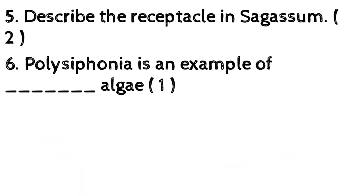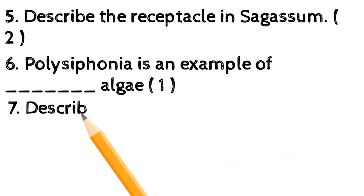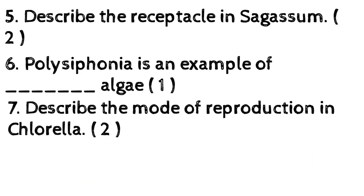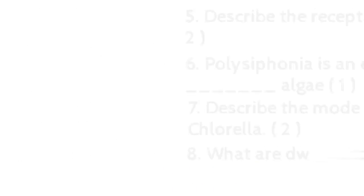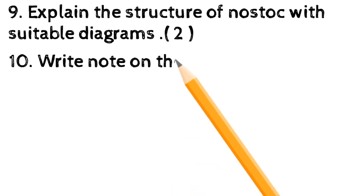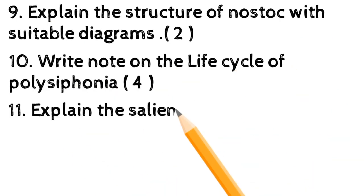6. Polysiphonia is an example of algae (1 mark). 7. Describe the mode of reproduction in Chlorella (2 marks). 8. What are dwarf shoots? (2 marks). 9. Explain the structure of nostoc with suitable diagrams (2 marks).